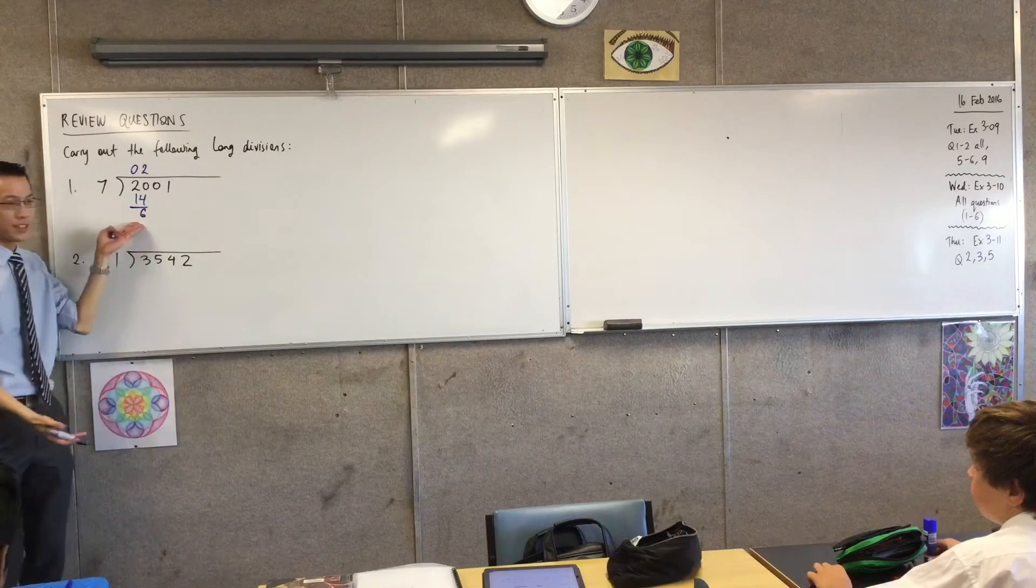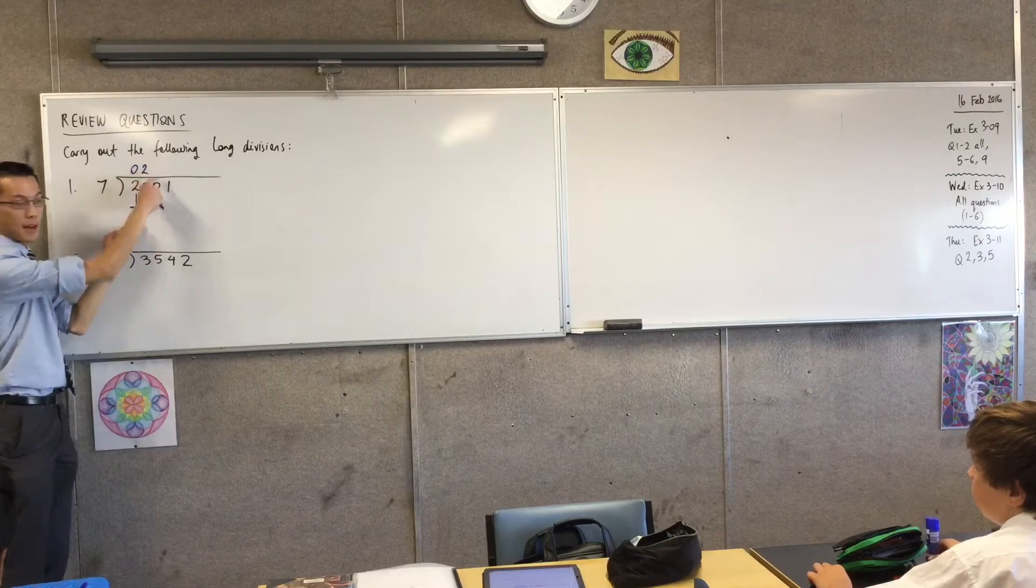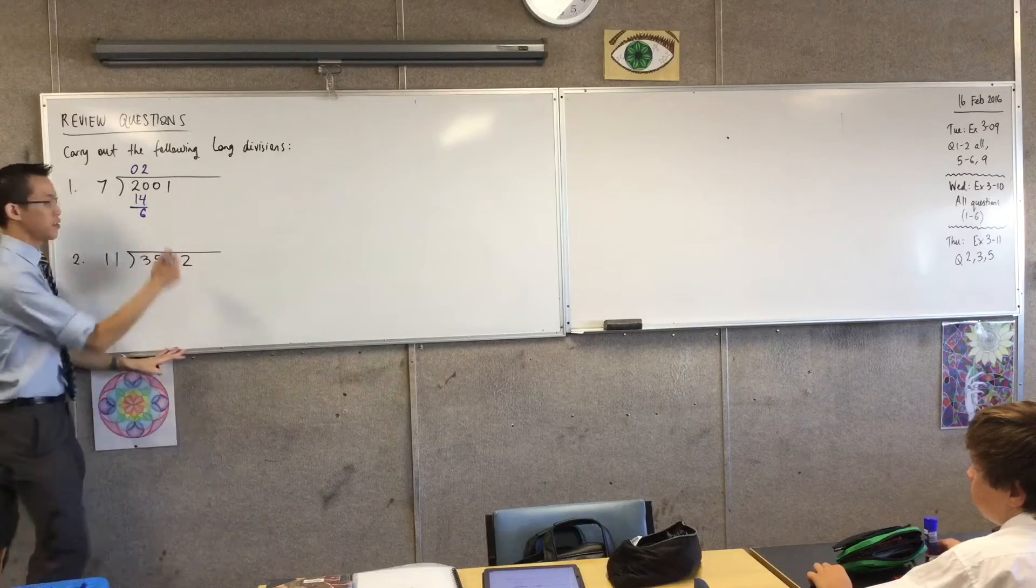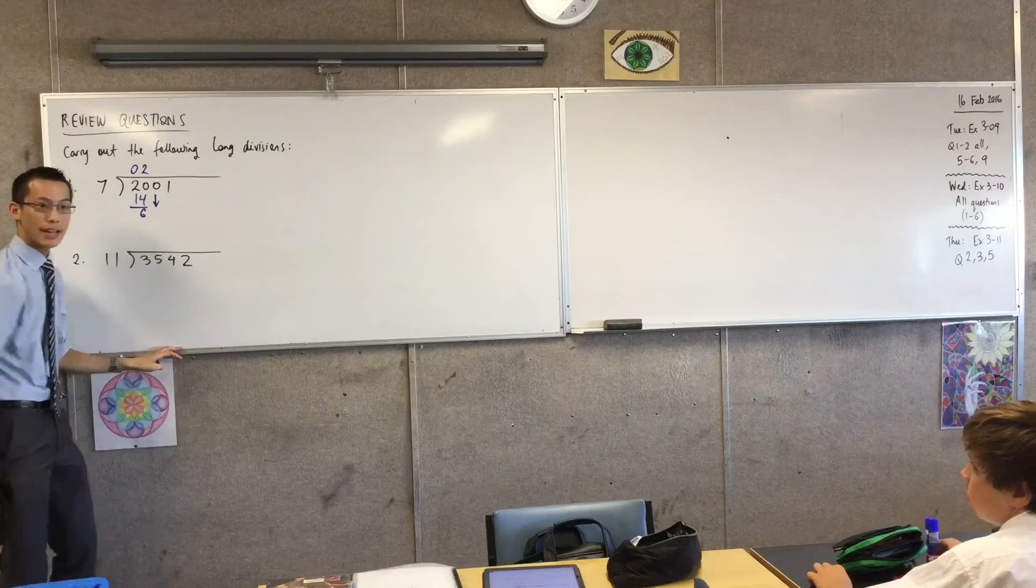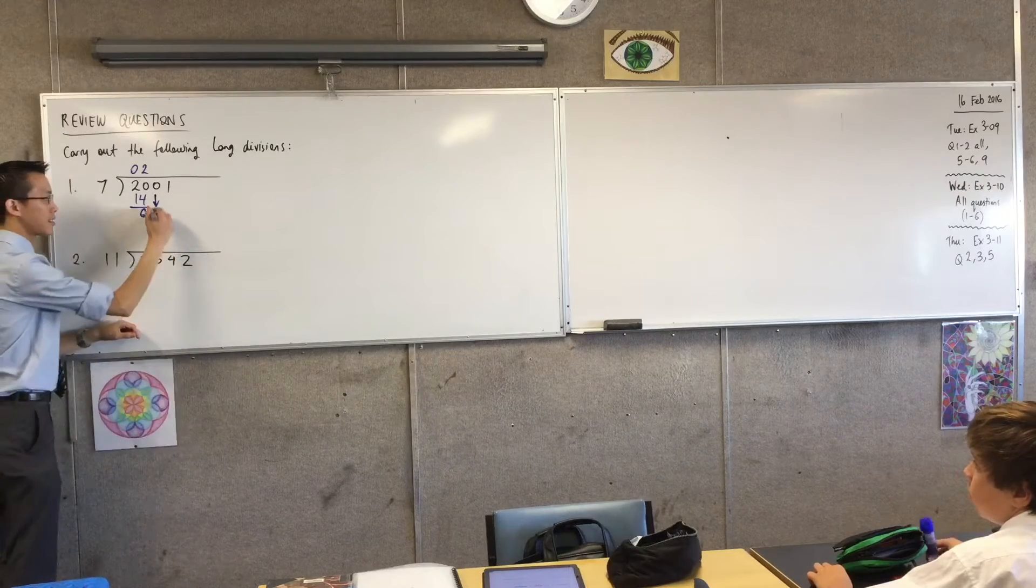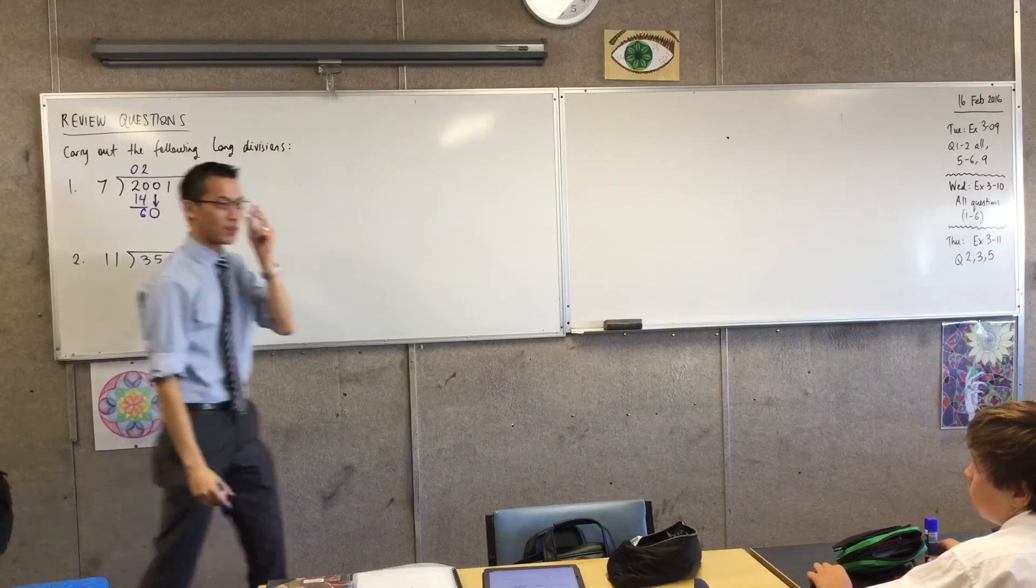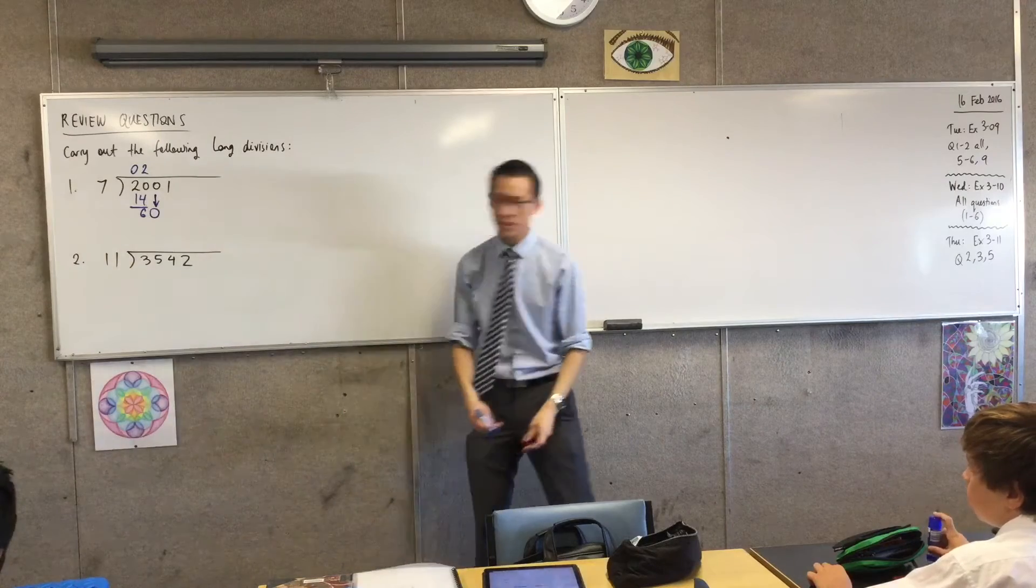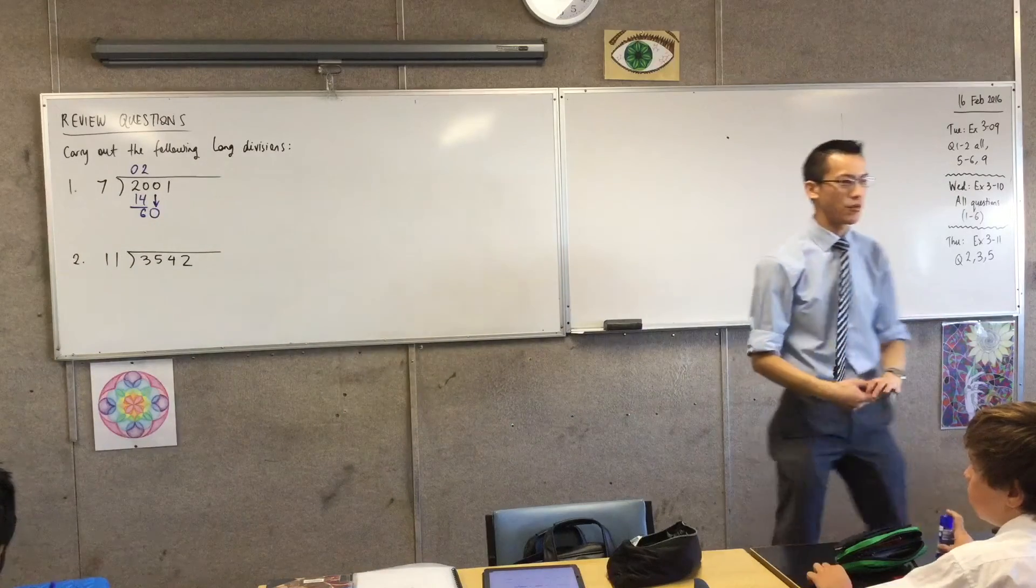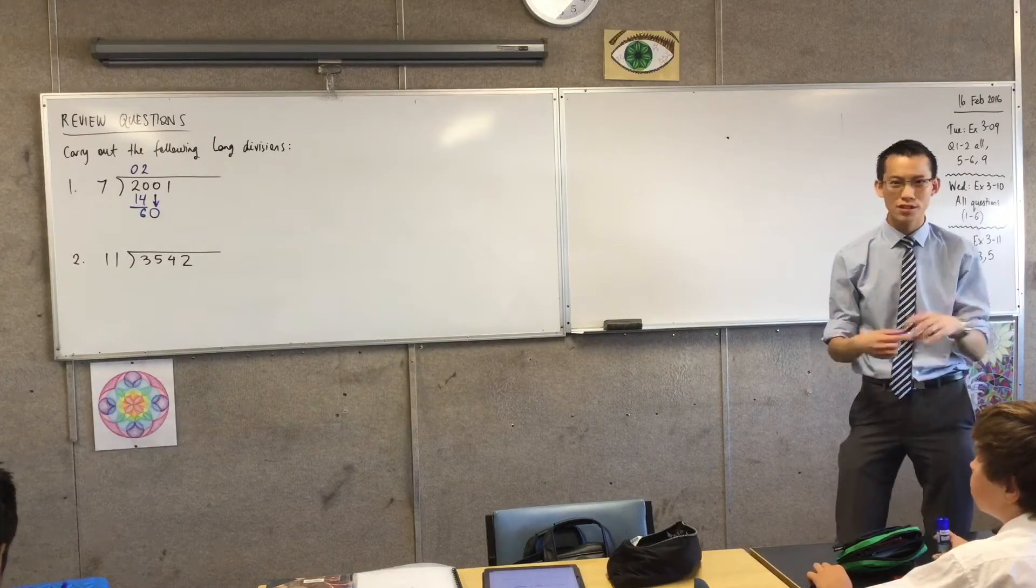Now I can't fit any 7s in there, which is the whole point of saying this number. So I need to go to the next number. Some of you might like to draw that arrow down like that because I can't fit any in 6. I'll bring the next number down, which happens to also be a 0. How many 7s can we fit in? Somebody hasn't said anything just yet.